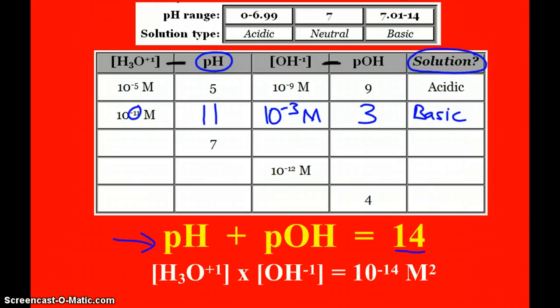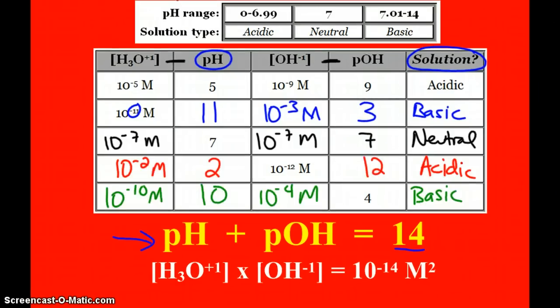The next row there, pH of 7, pOH of 7. Both of these concentrations are 10 to the negative 7. That's a neutral solution. That's the one we were just talking about. So pause the video. Take two seconds and see if you can complete the last rows. So hopefully you got those answers for those last two rows. That would be great if this was as complicated as the topic got. But it's not.